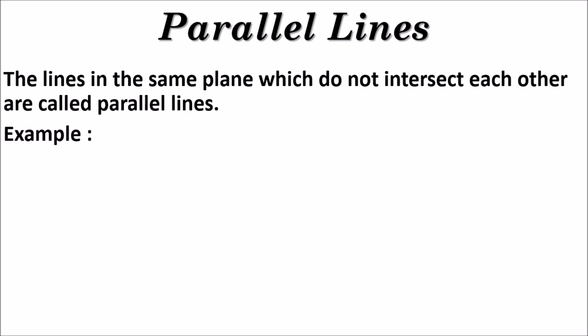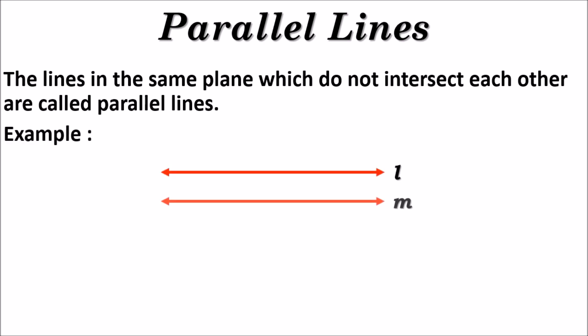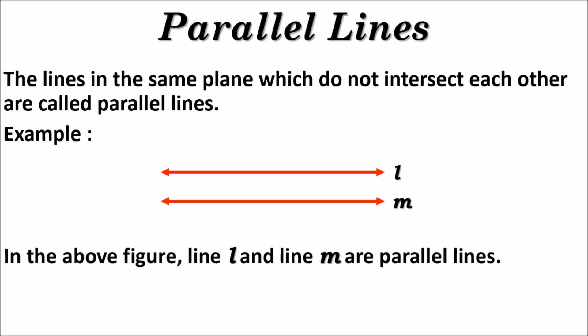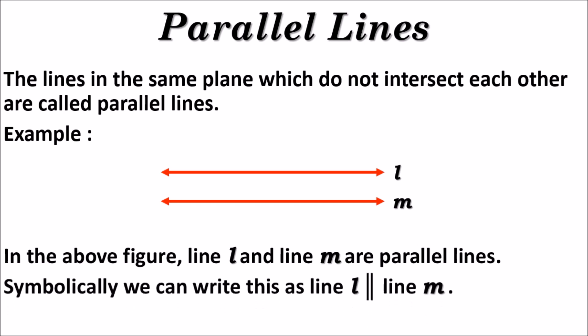Here we have line l and line m. You can see that line l and line m do not meet each other, do not intersect each other, and the distance between those two lines is the same. Such lines are called parallel lines. Symbolically we write this as line l parallel line m, using two vertical lines as the symbol for parallel.